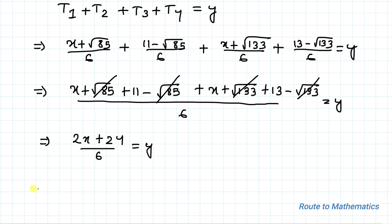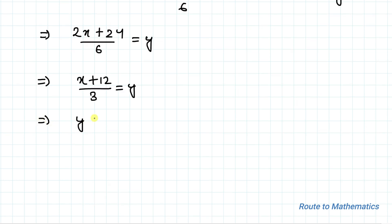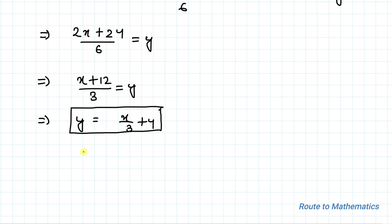So we have (2x + 24) / 6 = y, which simplifies to (x + 12) / 3 = y. This implies y = x/3 + 4. So we are getting y = x/3 + 4. We were asked to find for what values of x the value of y is an integer.